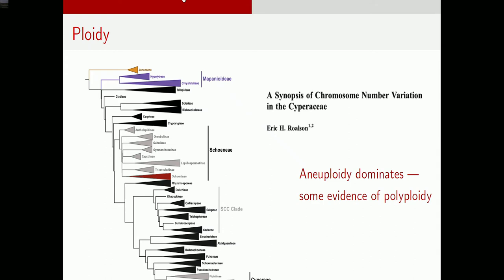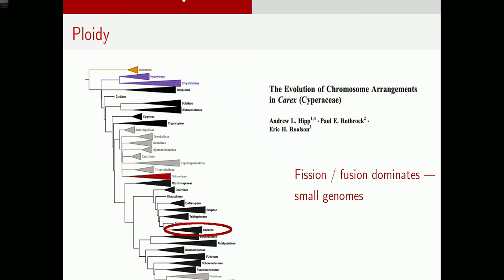Over ten years ago, Eric Roalson wrote an article on chromosome number and genome size evolution in the Cyperaceae, concluding that aneuploidy dominates within the family but there is some evidence of polyploidy. At around the same time, Andrew Hipp was doing a lot of work on Carex — over 2,000 species worldwide — and wasn't finding a lot of polyploidy, but was documenting a lot of fission and fusion: chromosome breakage due to holocentrism and chromosome fusion.